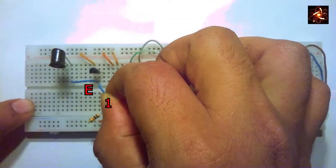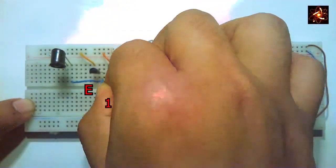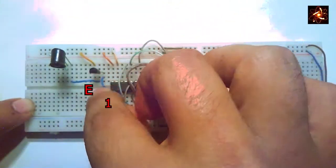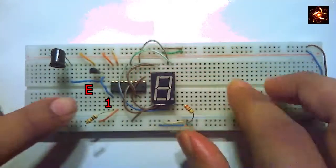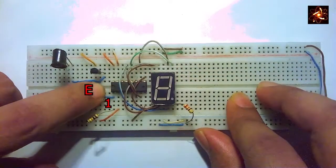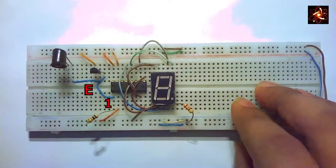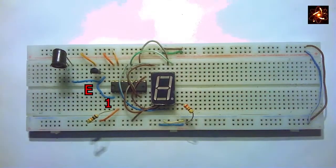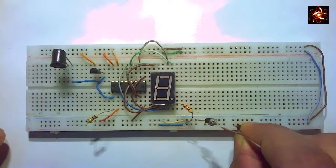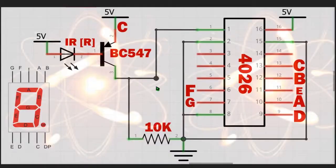Now the emitter pin of the transistor is connected with the first pin, which is the clock pin of the IC. The emitter pin is connected with the first pin of the IC — so this is the complete circuit diagram.